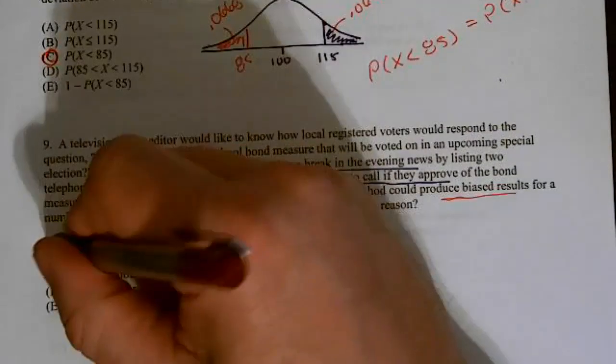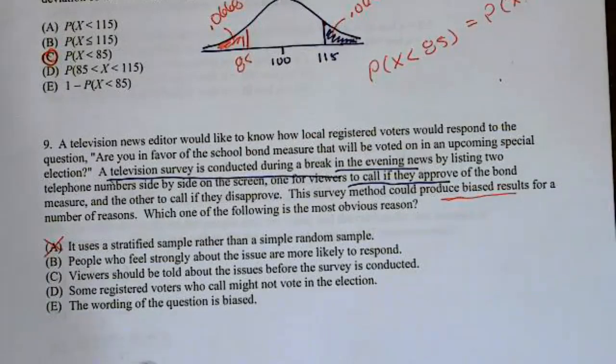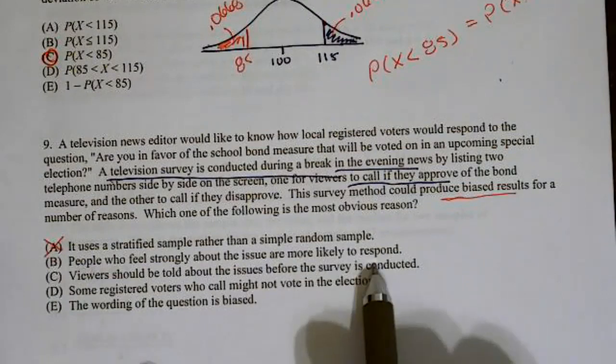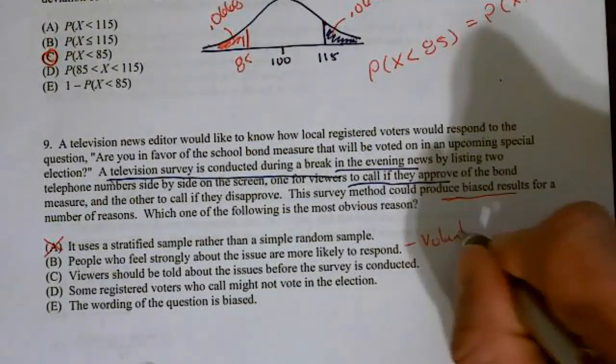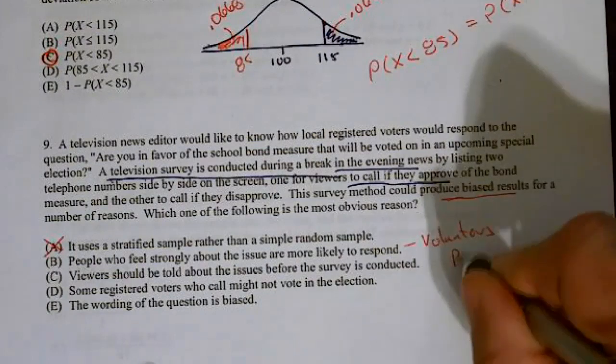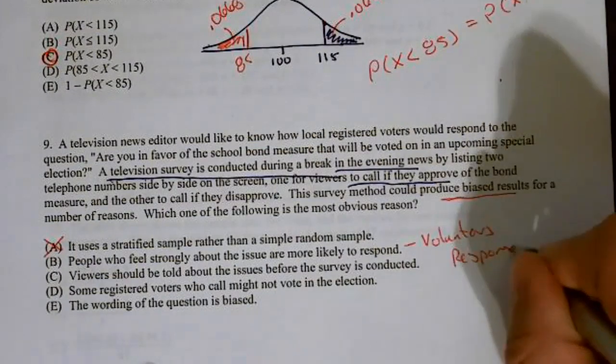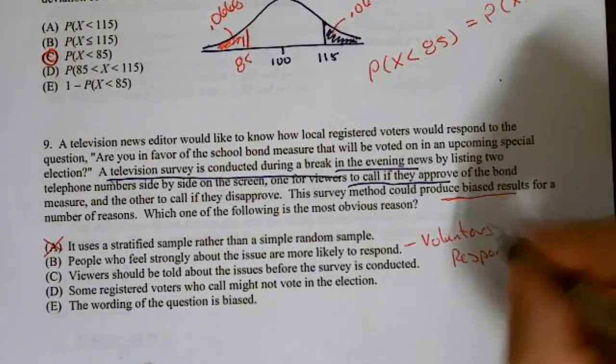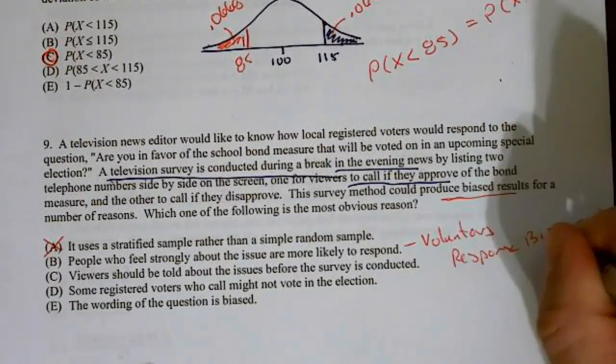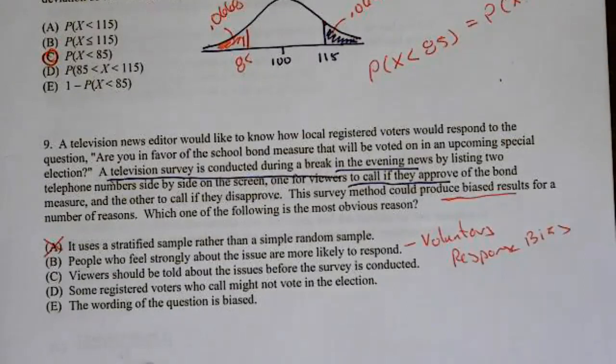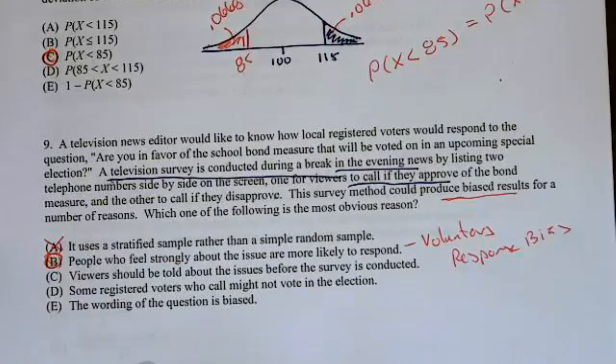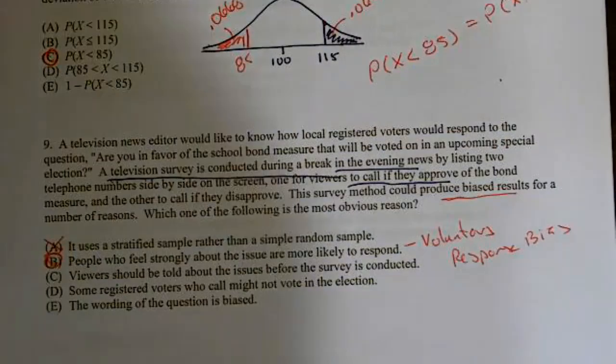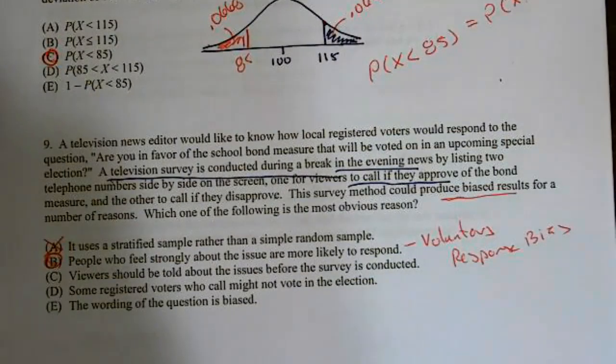Since we didn't randomly select them, voluntary response bias, and the people who feel most strongly are likely to vote. So it uses a stratified sample? No, it didn't. There was no stratification. There was no randomization, you just called in if you felt like it. People who feel strongly about the issue are more likely to respond? Yes, this is voluntary response bias. Only those who care will be the ones that vote, and those that feel strongly one way or the other are the most likely to vote. So for number nine, we have B. That's the end of this video. I hope to see you on the next one. Thanks for watching.